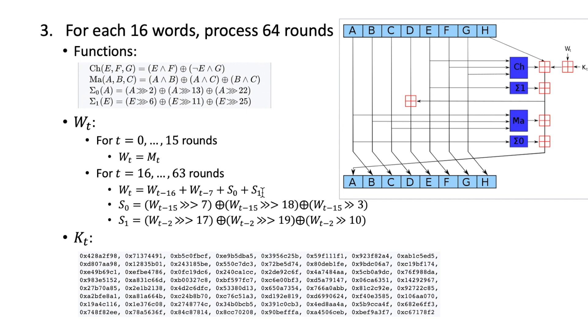S0 here is the result of this operation: we take the value in W(t-15) and right rotate 7 bits, and also the value right rotated 18 bits, and XOR together.